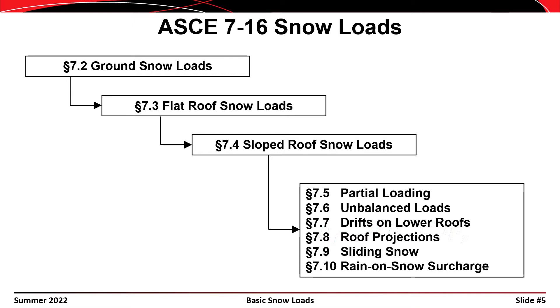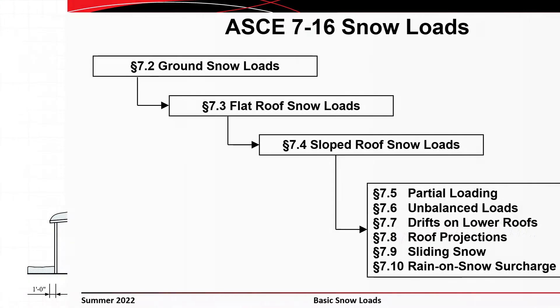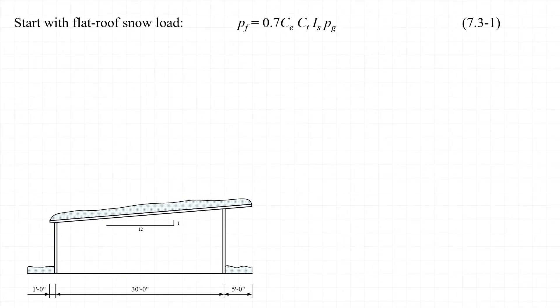Partial loading, unbalanced loads, drifts, and other detailed snow loads won't be considered in this example. We'll start off with the equation for the flat roof snow load from Chapter 7 of the 2016 edition of the ASCE 7 standard — that's equation 7.3-1.